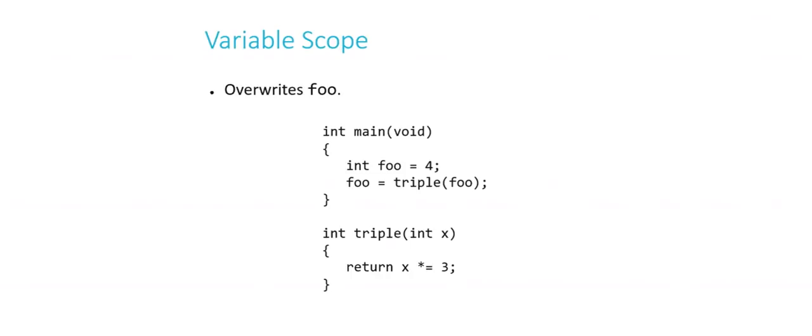So now, if we added another line of code here at the end of main to print out the value of foo, it would, in fact, print out 12.